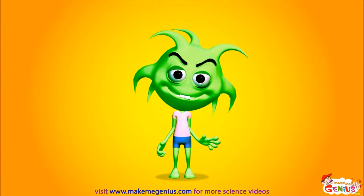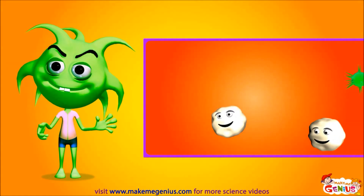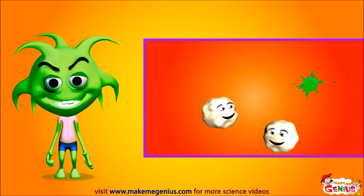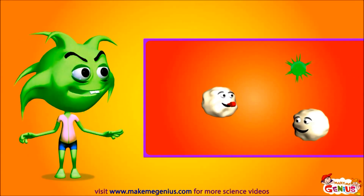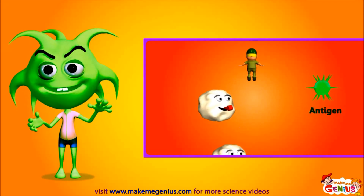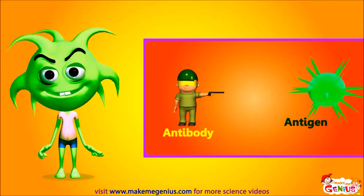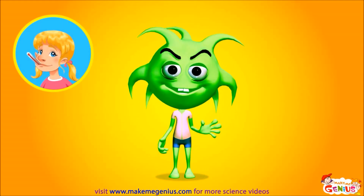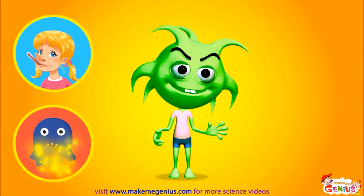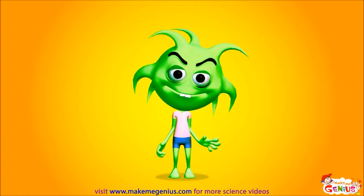We can't make you sick every time we enter your body. Your immune system has white blood cells — they're like police for guarding your body against us. Once they find or see us, they whistle and they name us antigens. Then they send antibodies to kill us. Sometimes you get a fever. Your body temperature goes up and viruses are killed due to high temperature. So a fever can protect you from viruses.